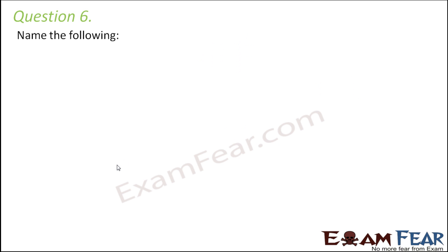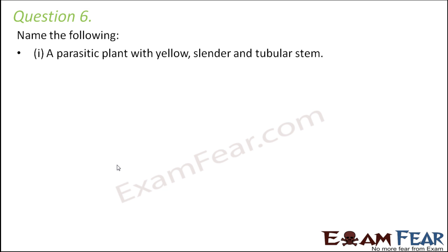Question number 6. Name the following. A parasitic plant with yellow, slender and tubular stem. You remember Cuscuta? They do not have a very thick stem — very thin, almost hair-like stems — and they are yellow in color due to lack of chlorophyll.